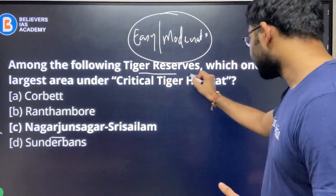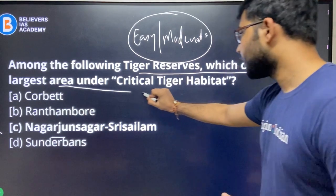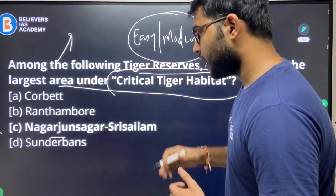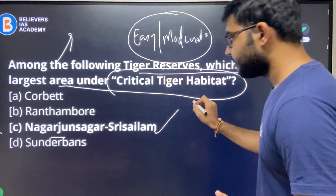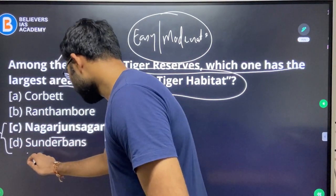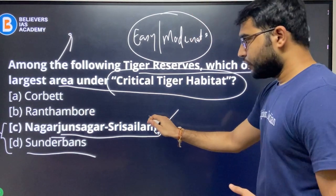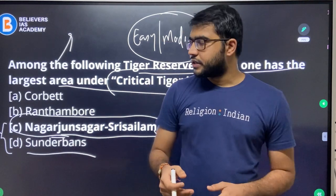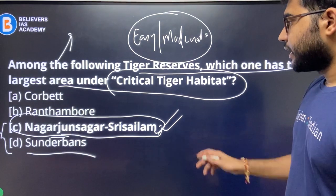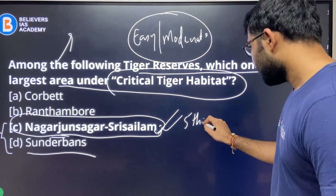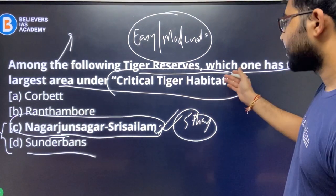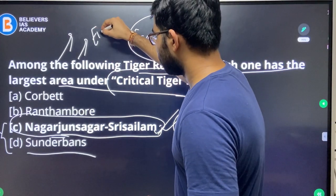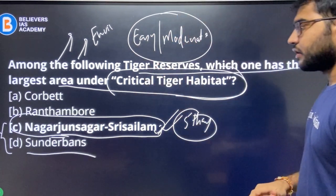Next question: among the following tiger reserves, which has the largest area of critical tiger habitat? This was in news last year and was a potential question. Nagarjunasagar-Srisailam is the correct answer. Many students were confused between Nagarjunasagar-Srisailam and Sundarbans. But if you followed current affairs of the previous year and went through important news articles, you would know this was the correct answer — it has somewhere around 5,000 square kilometres under critical tiger habitat. You can also verify this on the official website of the Ministry of Environment.